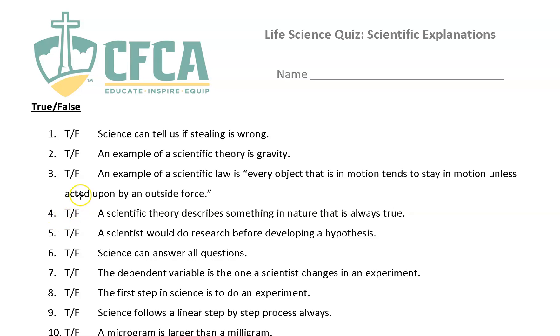Number one, science can tell us if stealing is wrong. Well, remember, science is all about data observation. Science is not about morality or supernatural. So wrong is a morality question. It's an ethical question. And so that's false.